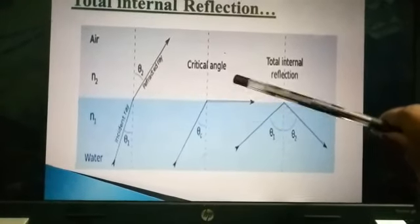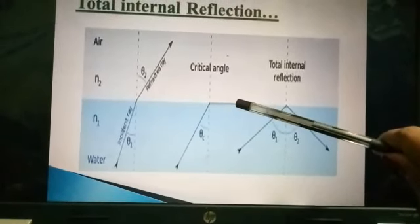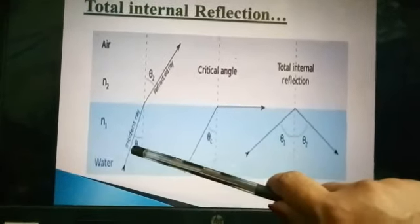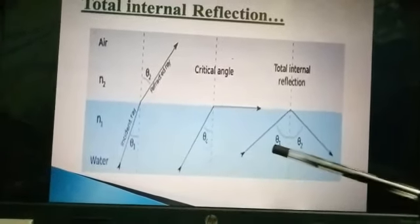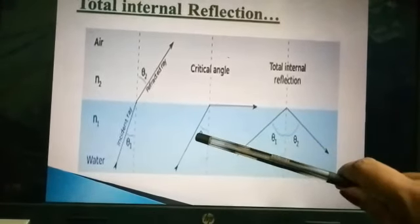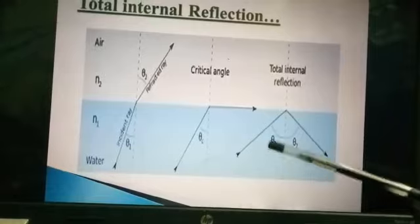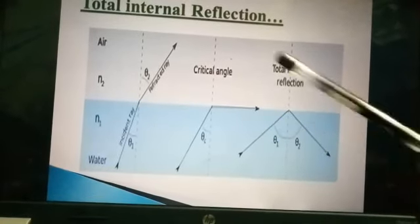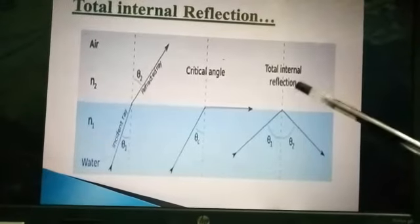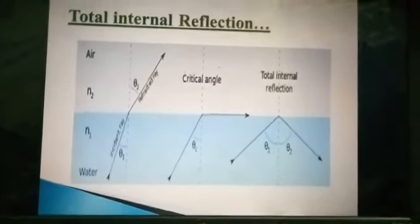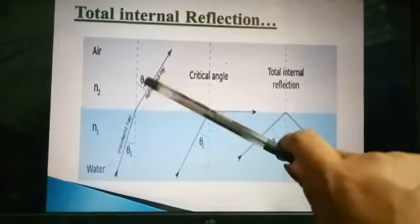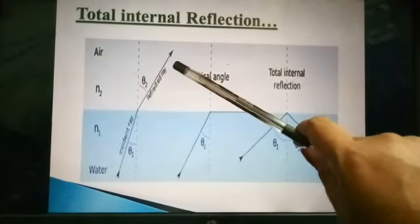When the incident angle is more than the critical angle, the reflected ray moves back into the same medium — this is known as total internal reflection. If the incident angle equals the critical angle, it moves on the interface between air and water, but if the incident angle is more than the critical angle, the ray reflects back into the same medium.